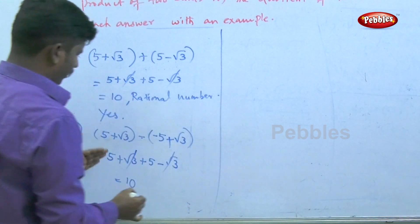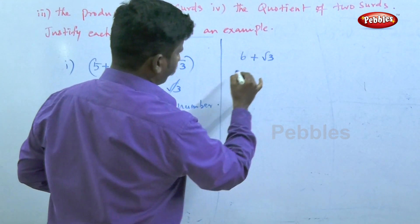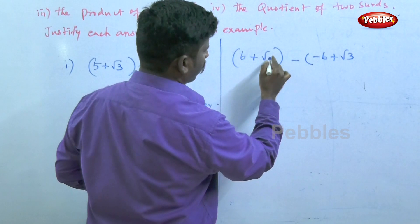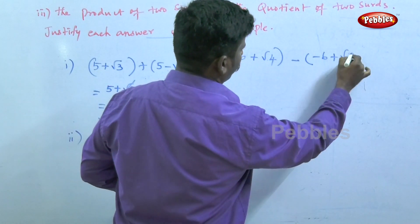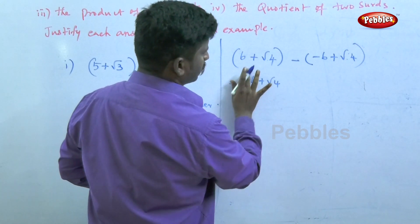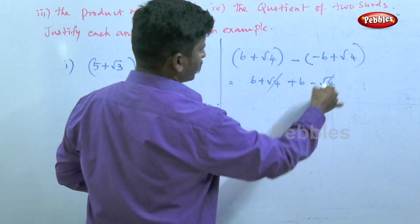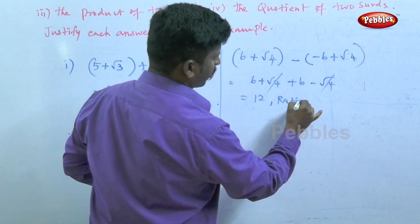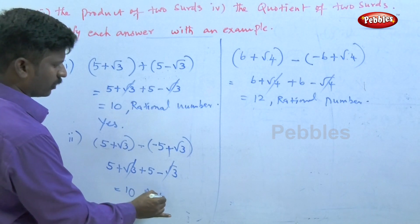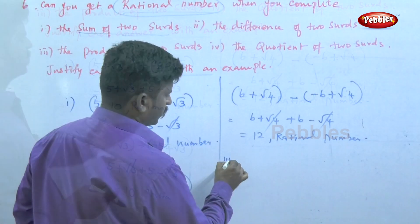Another example for the second point: (6 + √4) minus (6 − √4). Expanding: 6 + √4 − 6 + √4. The 6 terms cancel; √4 + √4 = 2√4. But with (6 + √4) − (6 − √4) simplifying, √4 − √4 cancels giving 12. Twelve is a rational number.